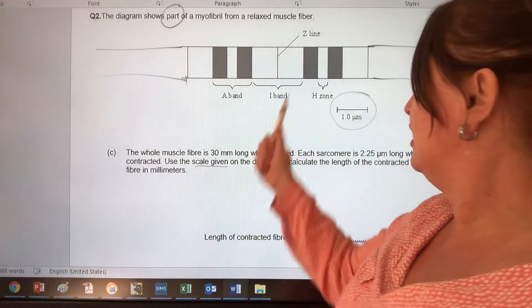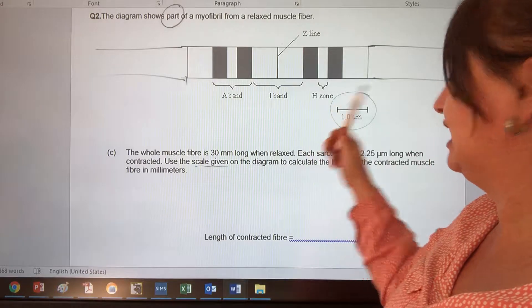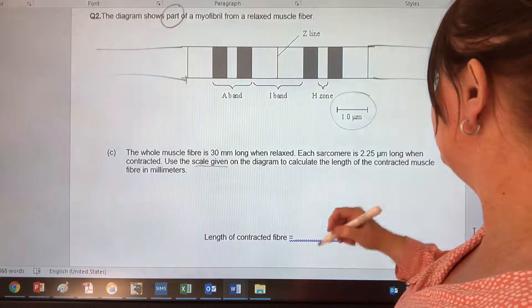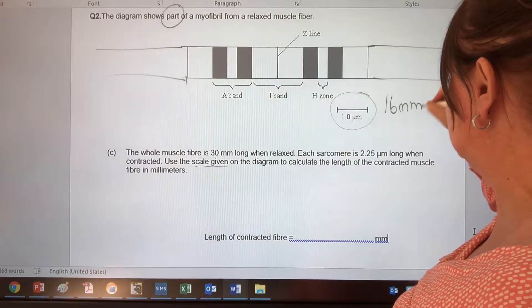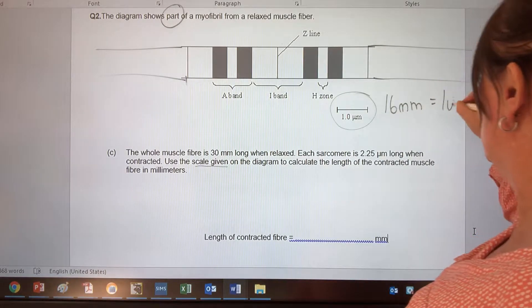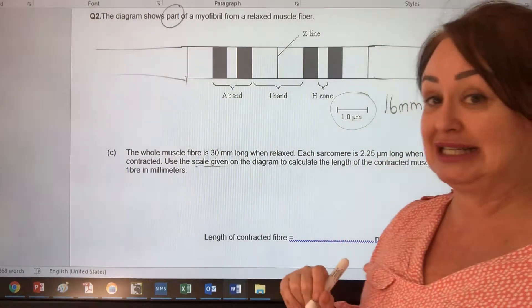So we know that we've got a scale here, and if I measure this with a ruler, what I find out is that on my paper, 16 millimeters is actually equal to 1 micrometer, because this band here measures 16 millimeters.